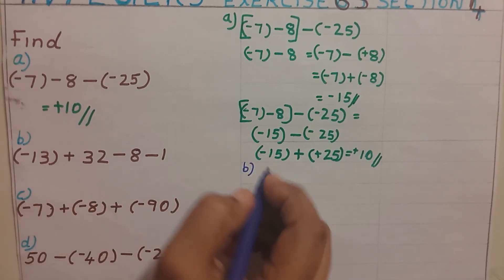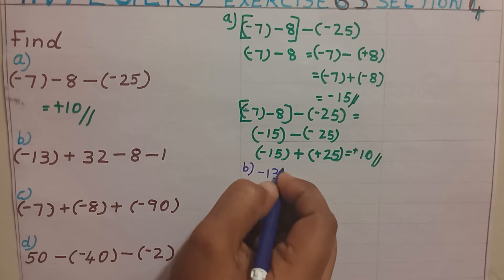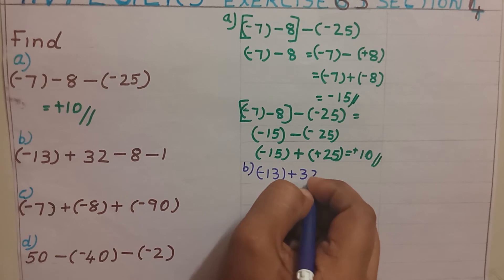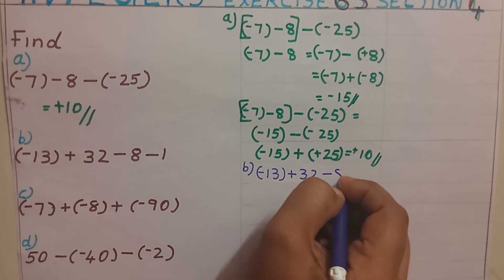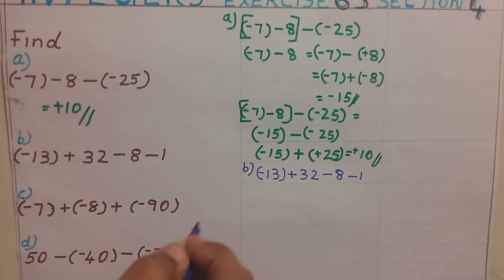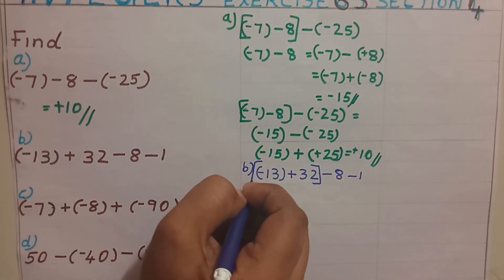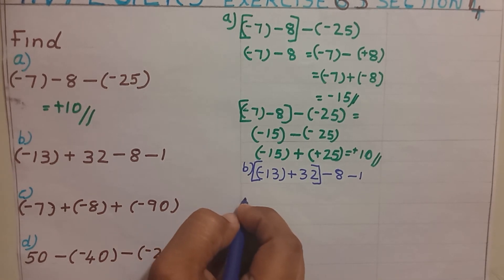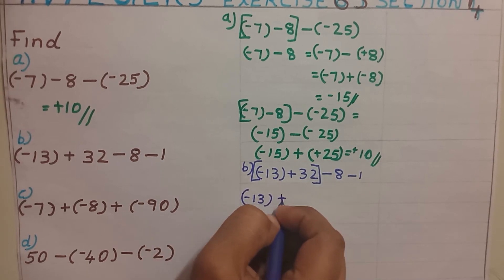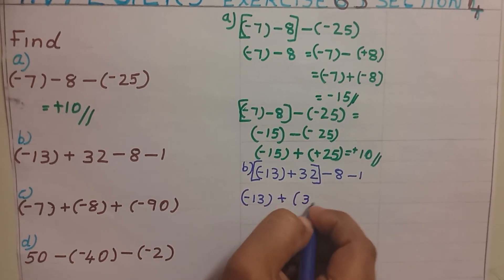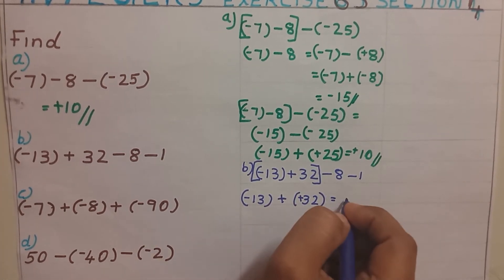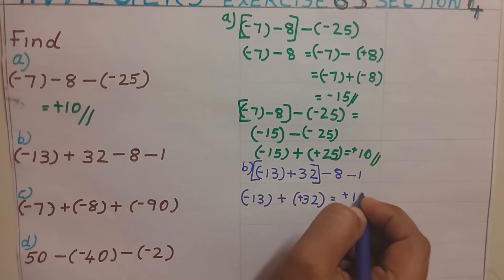Next question, next question B: minus 13 plus 32 minus 8 minus 1. First I am going to take these two numbers, that is I am going to rewrite these two numbers as minus 13 plus again 32. By applying the rules I will get positive 19.